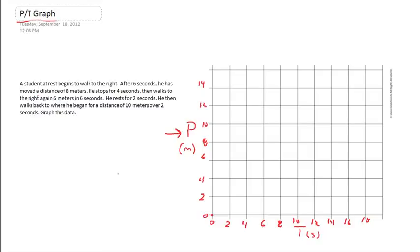A student at rest begins to walk to the right. So the student is at rest, and we're going to start off at a displacement of zero. I'm going to be right here, this is where I'm starting. After six seconds, I move a distance of eight meters. So I'm just going to go down to six seconds here. There's six seconds, and I've got a distance of eight meters, and I'm just going to mark that point right there.